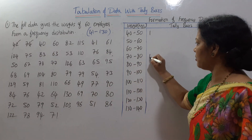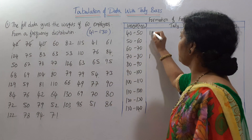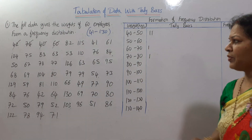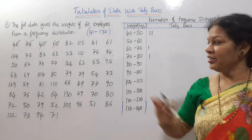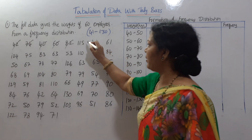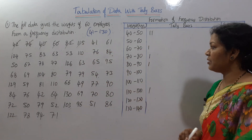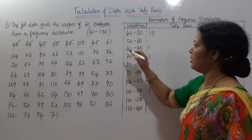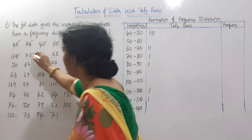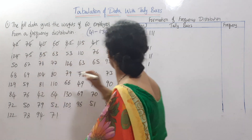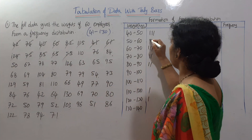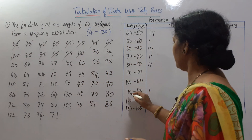72 falls in 70 to 80. Then 82 falls in 80 to 90. 41 falls in 40 to 50. 61 falls in 60 to 70. 124 falls in 120 to 130. 75 falls in 70 to 80. 63 falls in 60 to 70. 53 falls in 50 to 60. 110 falls in 110 to 120.